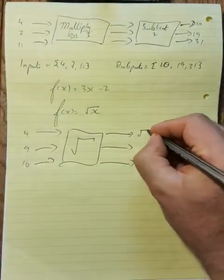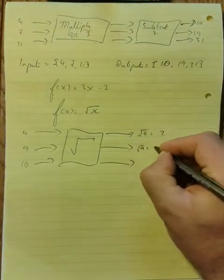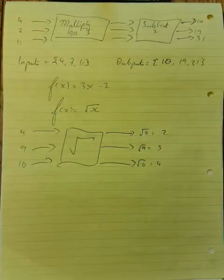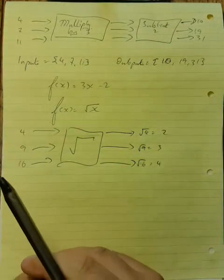Square root of 4, 2. Square root of 9, 3. Square root of 16, 4. And you say, well sir, for each of my inputs I have one output. So this is a function.